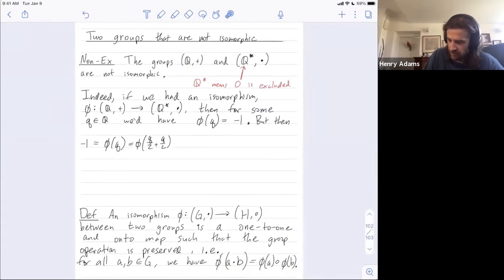Sure, in this additive group of rationals, I can always take a rational number and divide it in 2 and then think of that rational number q as q over 2 plus q over 2. But now I can apply this group isomorphism property.